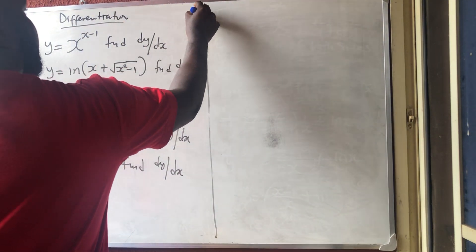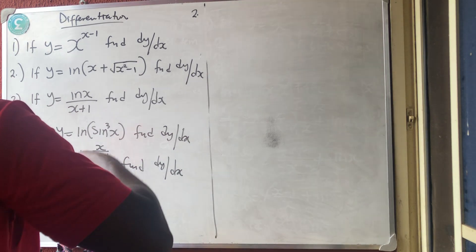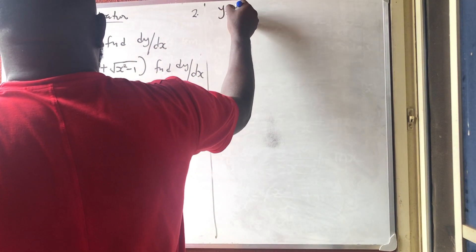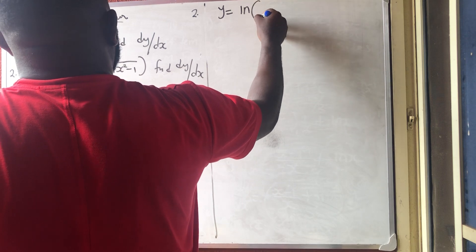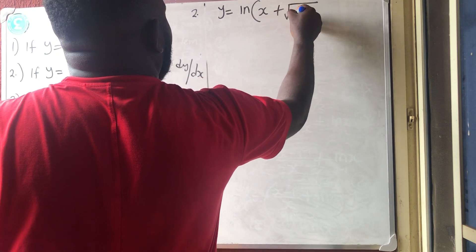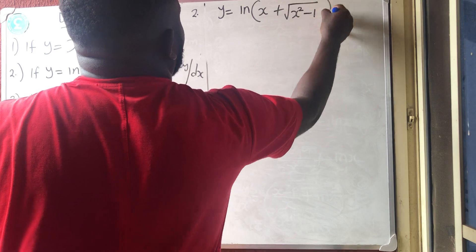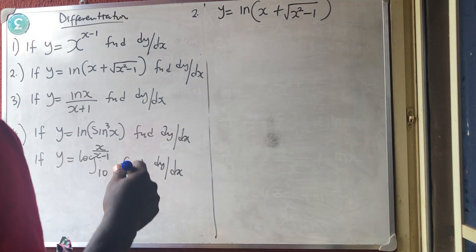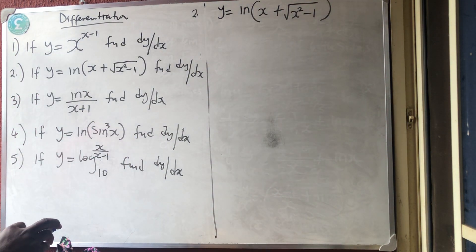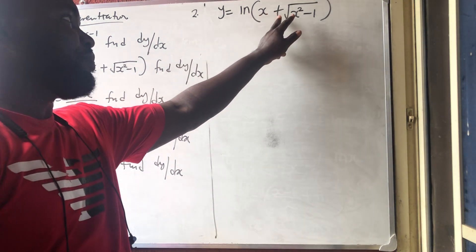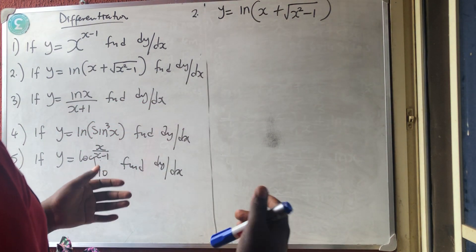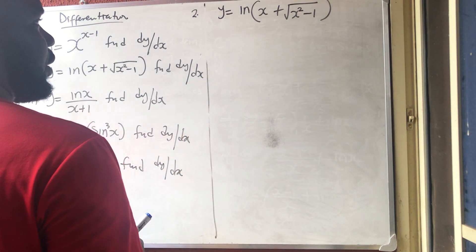For number 2, we have y equal to ln(x plus the square root of x squared minus 1). This is a chain rule. The chain rule says: differentiate the bracket, differentiate everything.